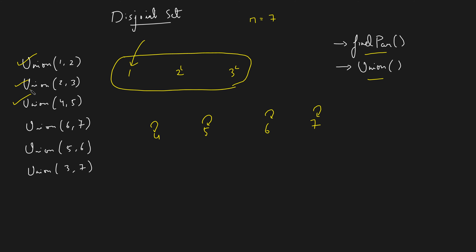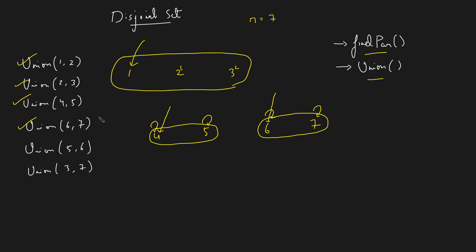For union(4, 5), it's a simple task — connect 4 and 5. Let's assume 4 is the parent. For union(6, 7), we combine 6 and 7 and assume 6 is the parent.